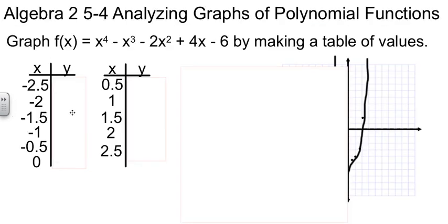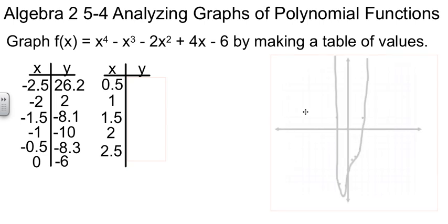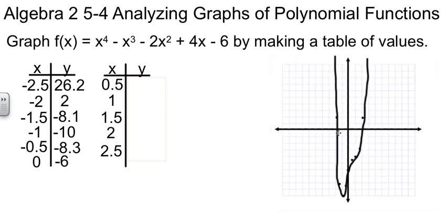Jumping back to the previous one, I went from a positive 2 to a negative 8.1. So somewhere between negative 2 and negative 1.5, there's a zero. We can't tell where it is just from looking at this, but we know it's in there somewhere.